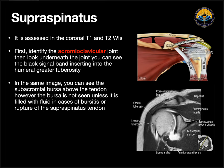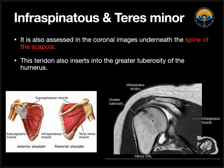Starting with the supraspinatus muscle — on coronal sections, we can see supraspinatus very beautifully. We have the acromioclavicular joint, and below it we can see supraspinatus going and inserting on the greater tuberosity. We can also see infraspinatus and teres minor on the coronal sections below the spine. However, to see infraspinatus more clearly, we prefer axial sections, as we can see the muscle, its tendon, and its insertion very beautifully on an axial section.